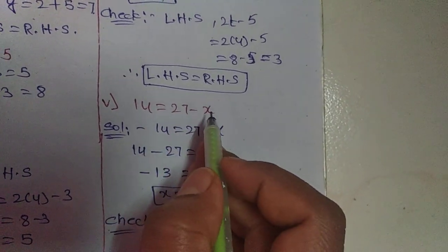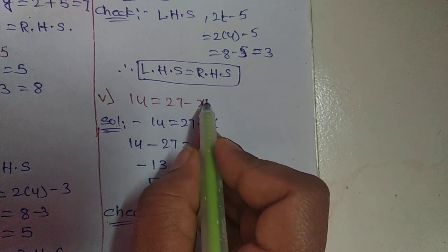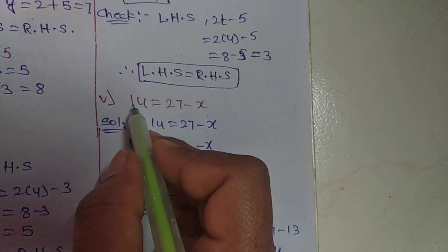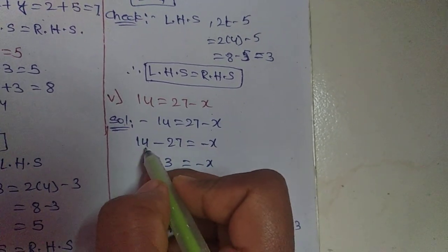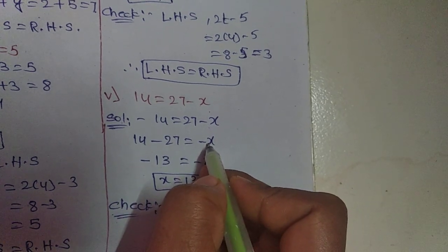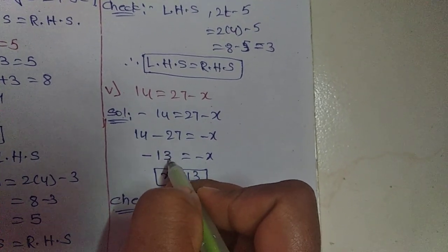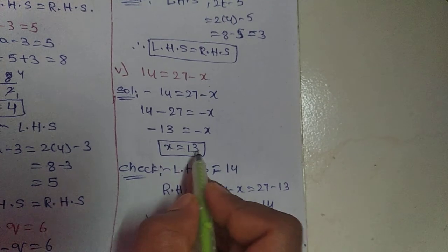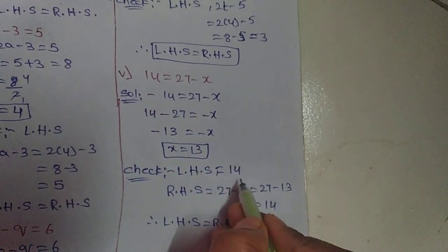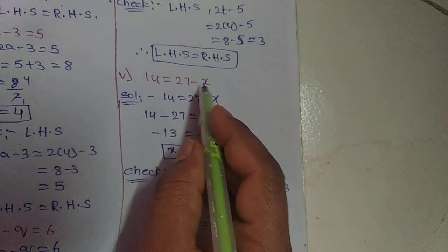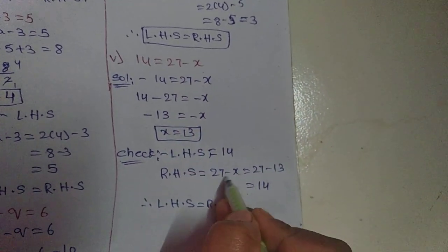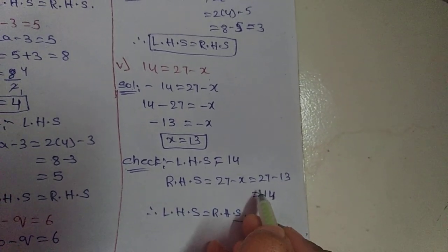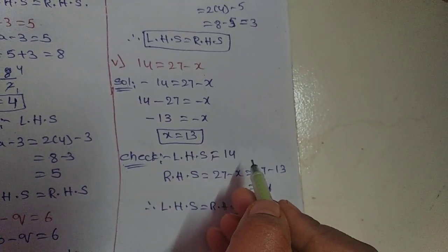Fifth one: 14 equals 27 minus X. We find the X value by transposing 27 to the left side. Positive 27 becomes minus 27. So 14 minus 27 equals minus X, giving minus 13 equals minus X. The minuses cancel, so X equals 13. Checking: 27 minus 13 equals 14. So LHS equals RHS. X equals 13 is the correct answer.